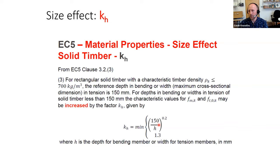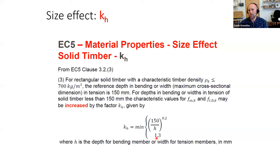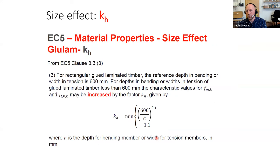For joists 100 mm deep, you plug 100 mm in as h and check whether the formula exceeds 1.3 — you take the minimum value, capping at K_h = 1.3 for solid timber. For glulam, the reference depth is 600 mm; K_h is capped at 1.1. Glulam gets less enhancement because the manufacturing already removes fissures and finger-joints the best sections together.